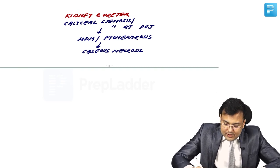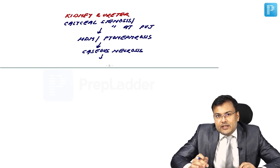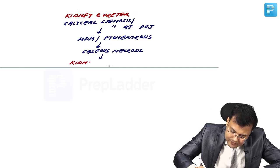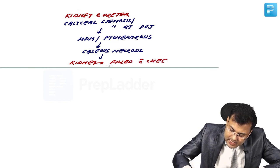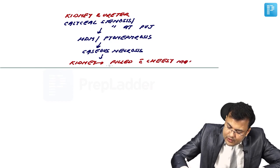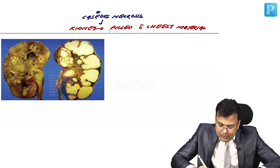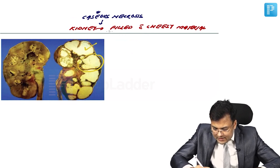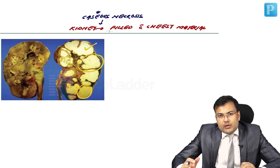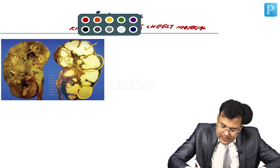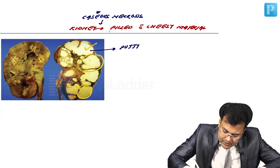Because of caseous necrosis, the kidney is filled with cheesy material and is known as putty kidney. This was asked as an image-based question in JIPMER. On gross examination, cheesy material is visible. Over time, calcification occurs, and the calcified kidney is known as cement kidney, with scattered calcification.